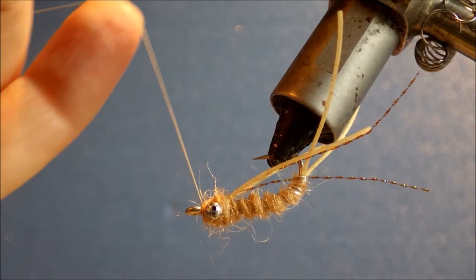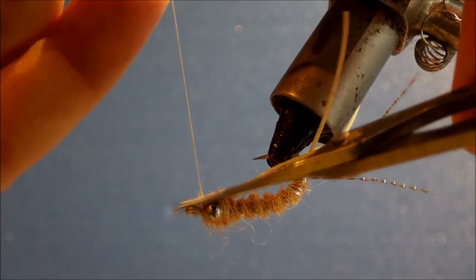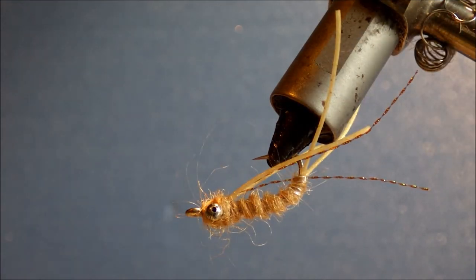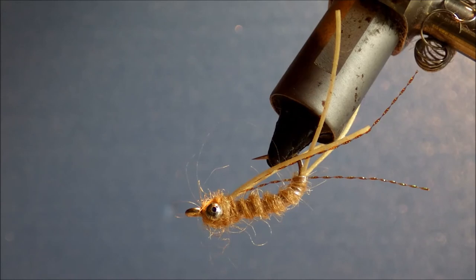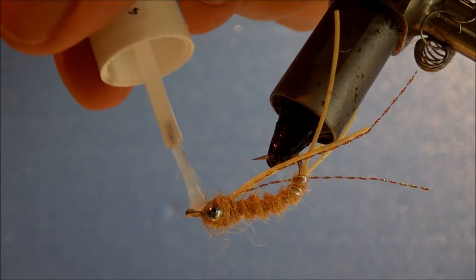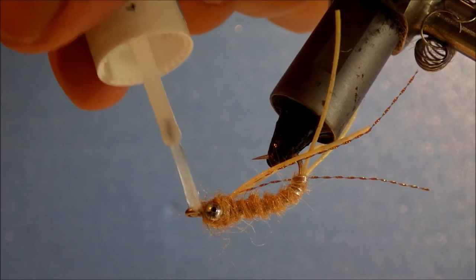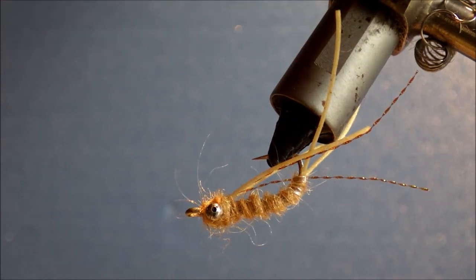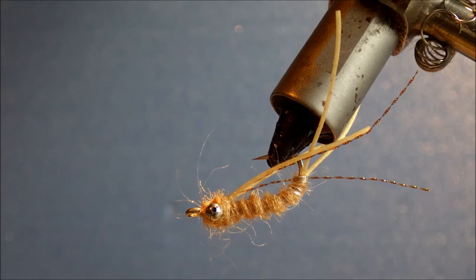Once that's bedded in tight, just snip it with your excess thread. And then come in with some varnish or head cement, super glue, whatever you like. I just use Sally Hansen's.